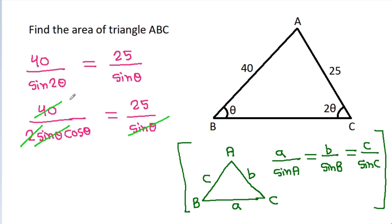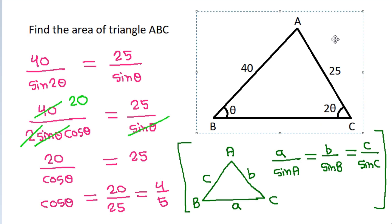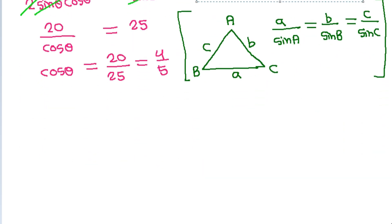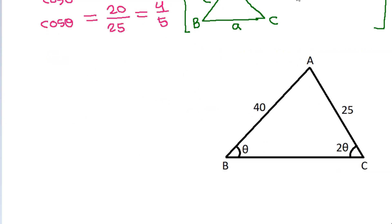Sine theta cancels out, and 2 times 20 is 40, so we get 20 divided by cos theta equals 25. Therefore cos theta equals 20 divided by 25, which equals 4 by 5.